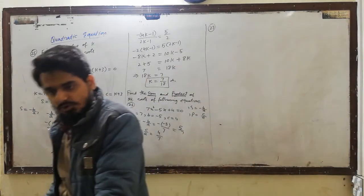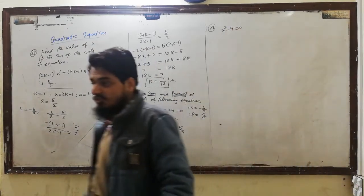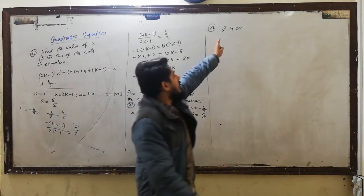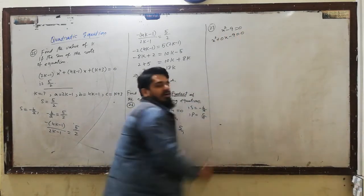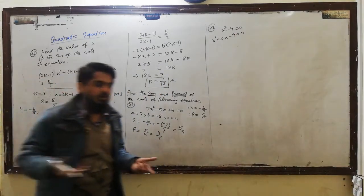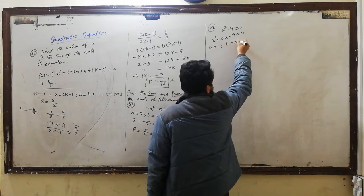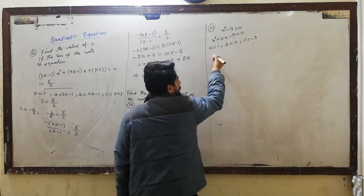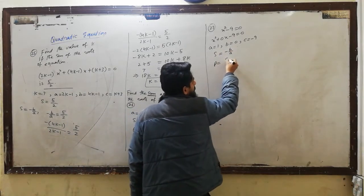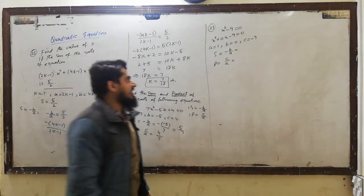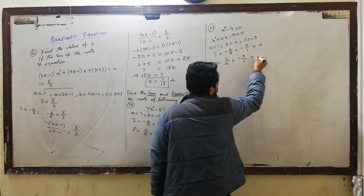Question number 27: x squared minus 9 equal to 0. इस question में B की value माजूद नहीं है, तो इसे लिखा जाएगा: x squared plus 0x minus 9 equal to 0. अगर x माजूद नहीं हो तो उसकी value 0 होगी। So A is equal to 1, B is equal to 0, C is equal to minus 9. Sum = minus 0 divided by 1 = 0. Product = minus 9 divided by 1 = minus 9.